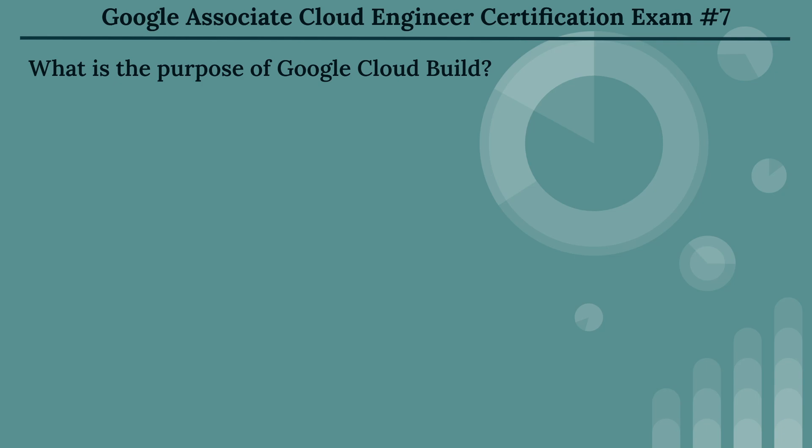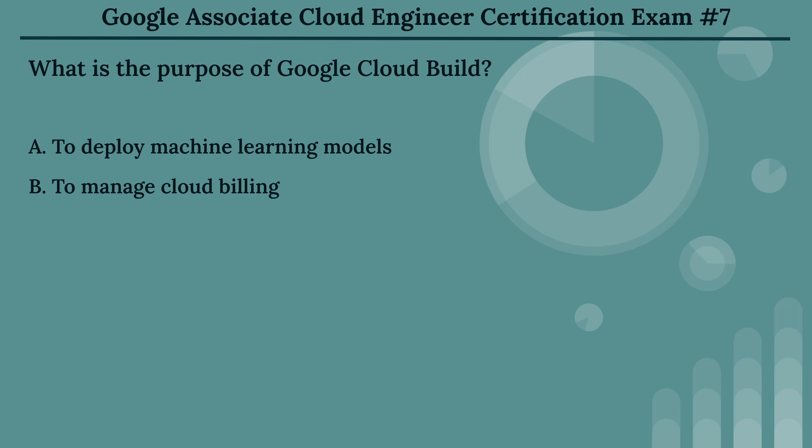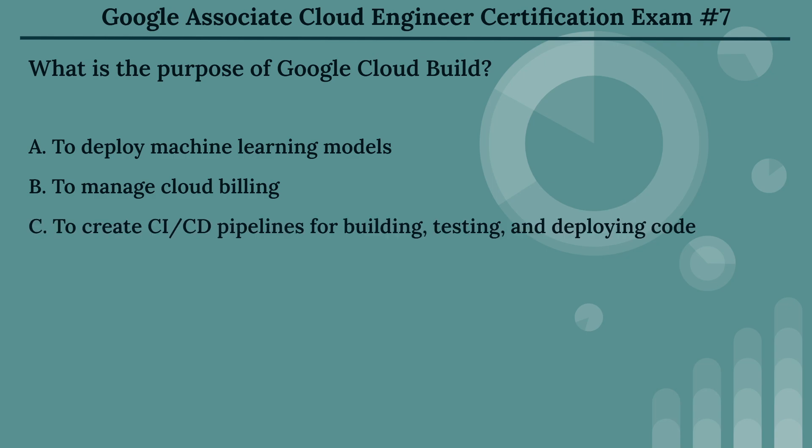The seventh question: what is the purpose of Google Cloud Build? The options are: Option A, to deploy machine learning models. Option B, to manage cloud billing. Option C, to create CI/CD pipelines for building, testing, and deploying code. Option D, to store large datasets.